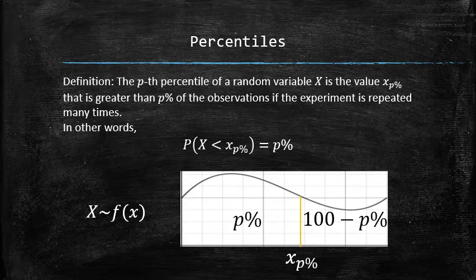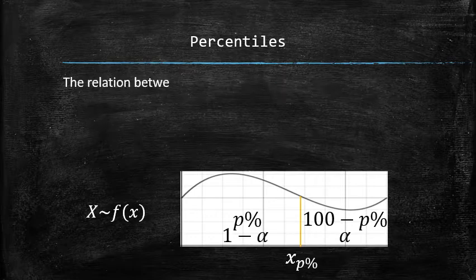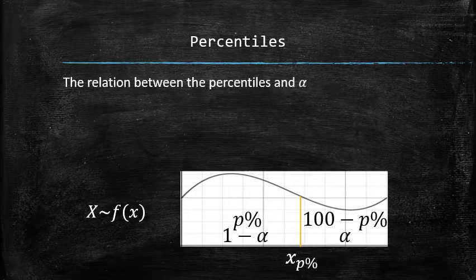By labeling the area to the right as alpha and the area to the left as 1 minus alpha, we can immediately observe the relation between the percentiles and the alpha notation that can be expressed in the following way.